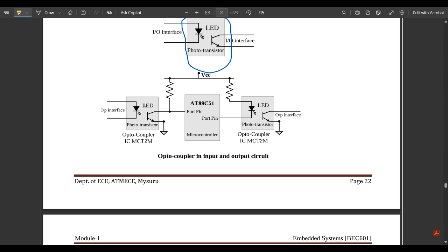This is the input interface where we have an LED and a photo transistor. At the output we have one more output interface with an LED and a photo transistor. The input of this LED is given to the microcontroller, the 8089C51. Resistors are used to control the flow of signals and pass the accurate signals which are required. VCC is the voltage supply.